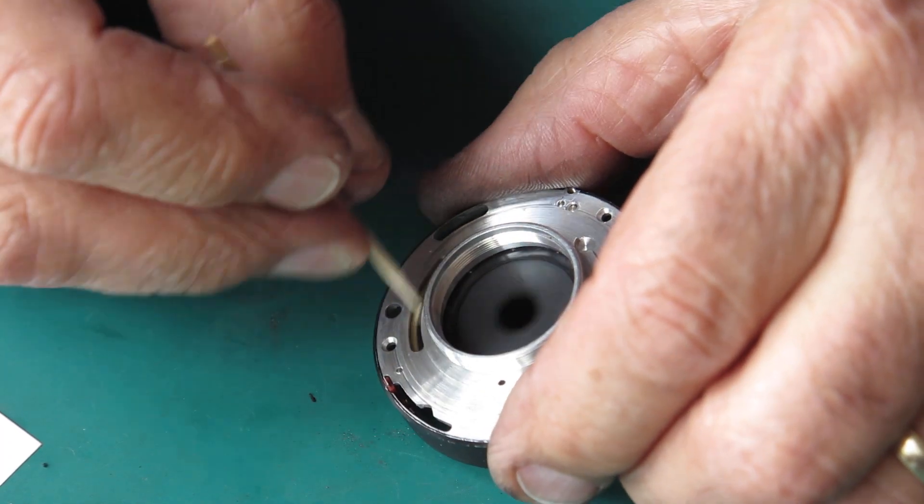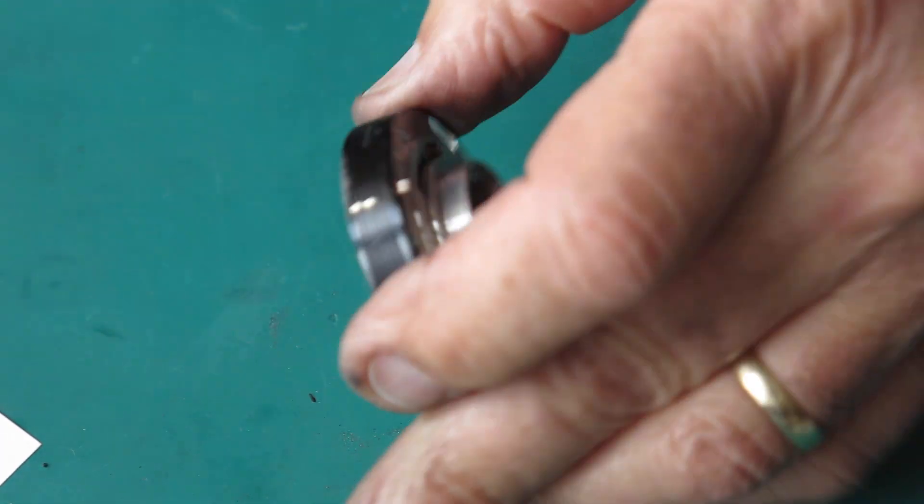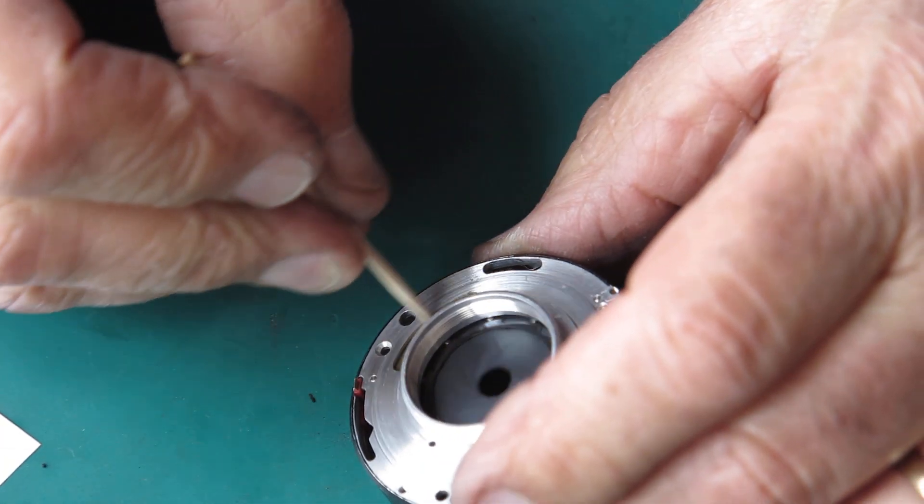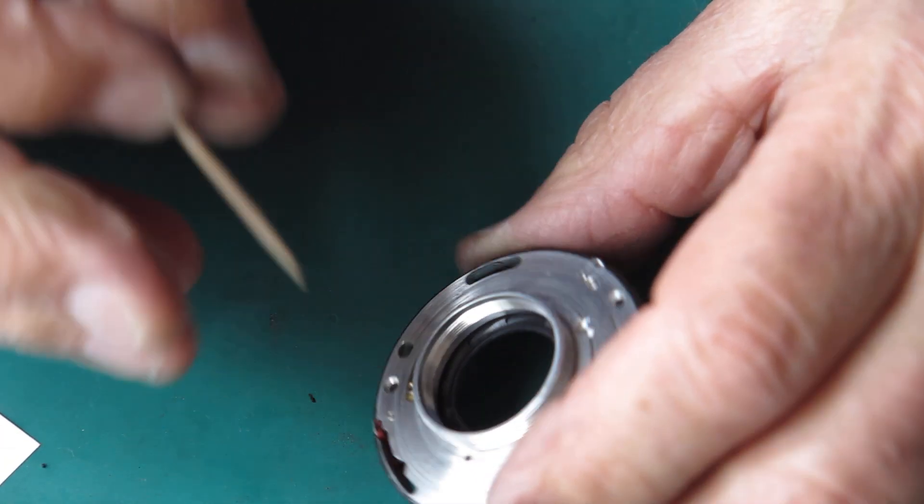The reason it's important that the diaphragm be very free-running is that the clip that connects the diaphragm and the shutter speed dial together is not particularly strong. So you don't want the blades causing any resistance, otherwise stuff's not going to happen correctly.